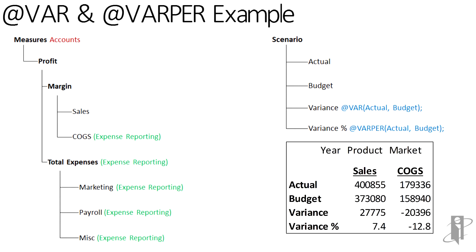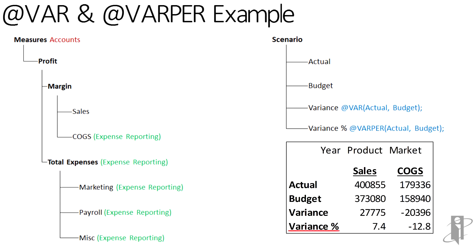Sales are $400,855 and Cost of Goods Sold are $179,336 on actuals. Budget was slightly lower for both. Notice the variance on Sales — because it's not tagged as an expense, it's Actual minus Budget, a positive result. But Cost of Goods Sold actual was higher than budget, which is a bad thing, so it shows negative $20,396. Similarly, the variance percentage for Sales shows a 7.4% increase (good), while expenses show a negative variance of 12.8% (bad).